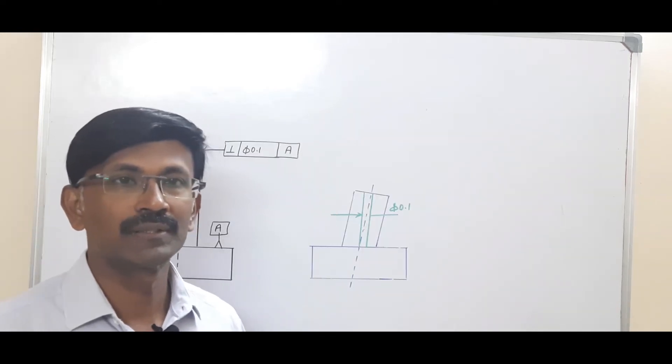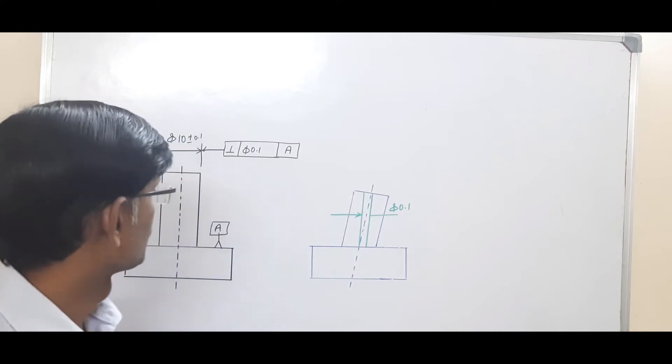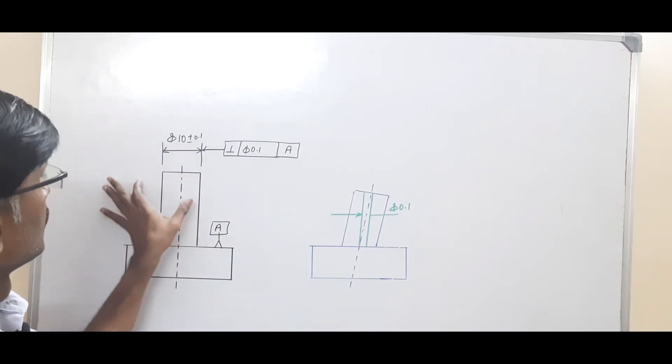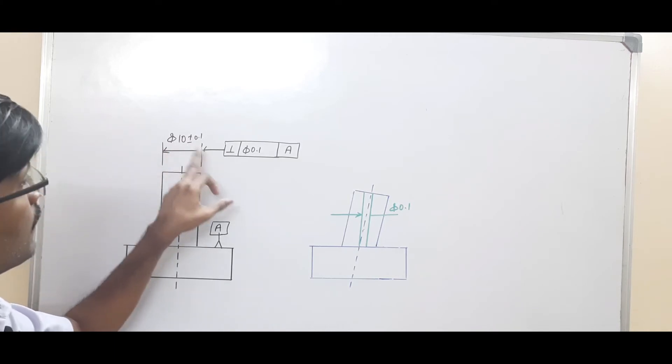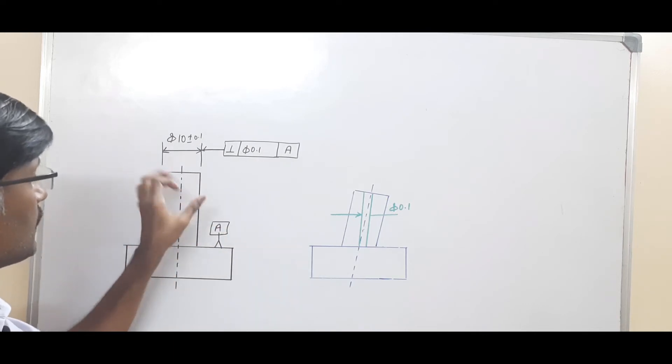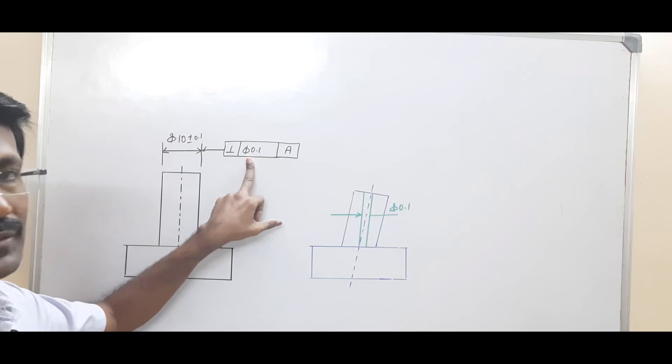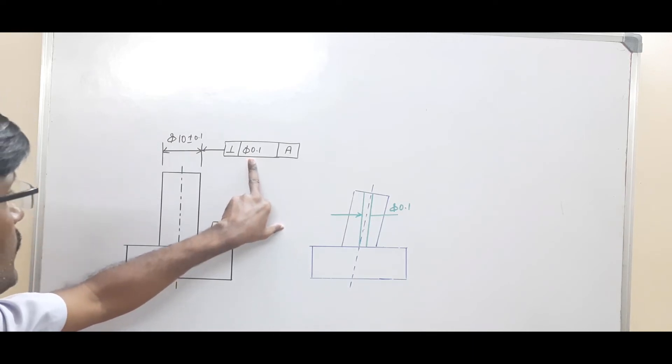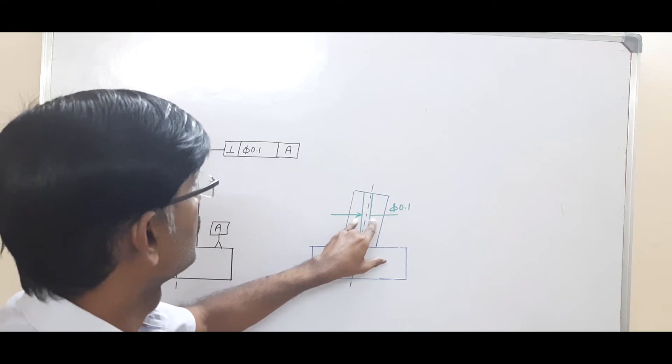Now let us look at an example of applying perpendicularity to a feature of size. Here there is a diameter with tolerance plus or minus 0.1. Perpendicularity is applied to this diameter with reference to datum A, and it is having a tolerance value of 0.1. So the meaning of this is there is a cylindrical tolerance zone of 0.1 which is perpendicular to the datum surface A.